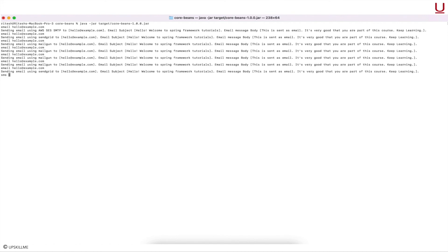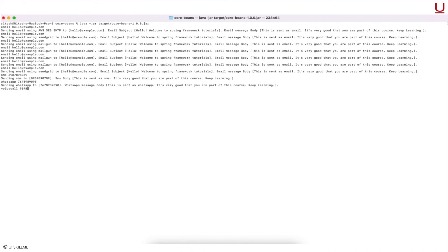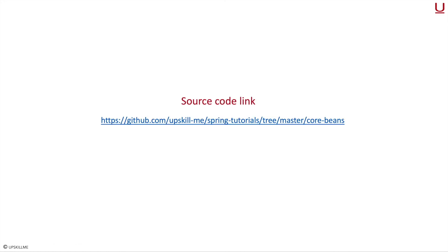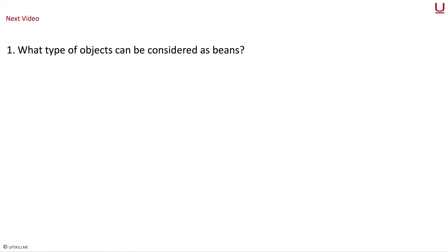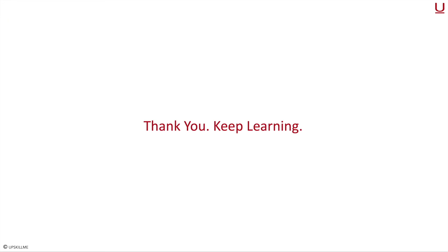We can see that the application is expecting input from the console. Providing some inputs and testing the application thoroughly — if you remember, the loop will run 10 times before the program will exit. That's it for today's video. Comment your doubts in the comment section and I will address them as promptly as possible. The link to the source code for this application is in the description section. In the next video we will understand beans in detail, covering: number one, what type of objects can be considered as beans; number two, bean instantiation; number three, bean life cycle. Thank you and keep learning — I will see you in the next one.